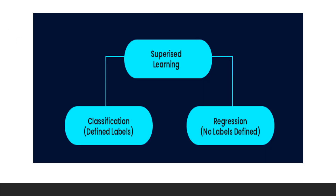Supervised learning problems can be further grouped into regression and classification problems. Both problems have a goal of constructing a model that can predict the value of the dependent attribute from the independent variables. The difference is that the dependent attribute is numerical for regression and categorical for classification. A regression problem is when the output variable is a real or continuous value such as the salary or weight of a person.